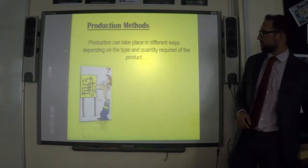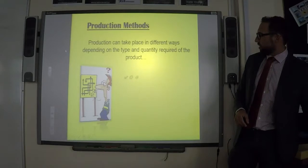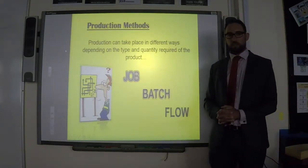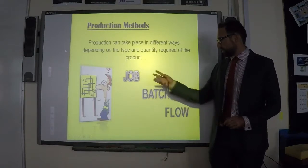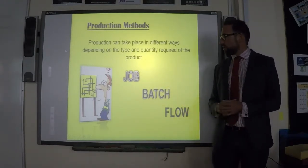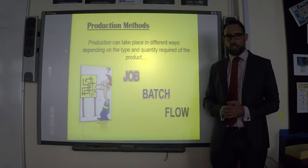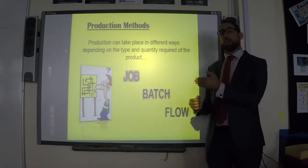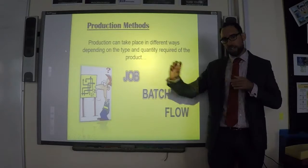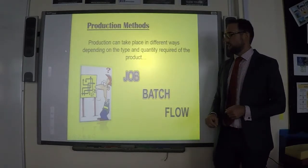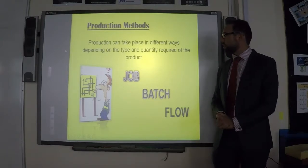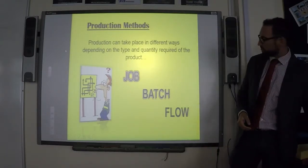We have three methods of production that you need to know: job production, batch production, and flow production. Remember, whenever we talk about operations it's about taking the raw materials — the inputs — that go into the production department, and coming out the other end are the finished products, the goods ready to be sold to customers.